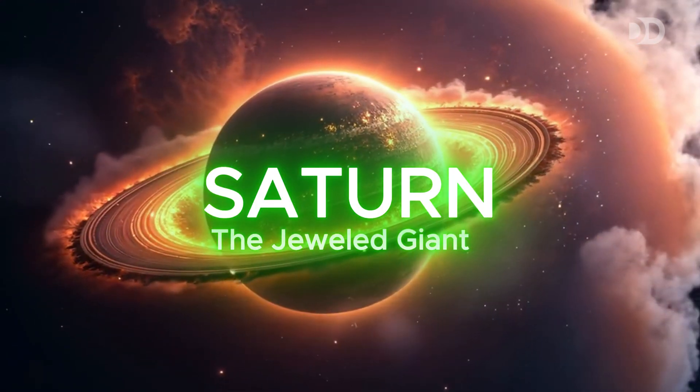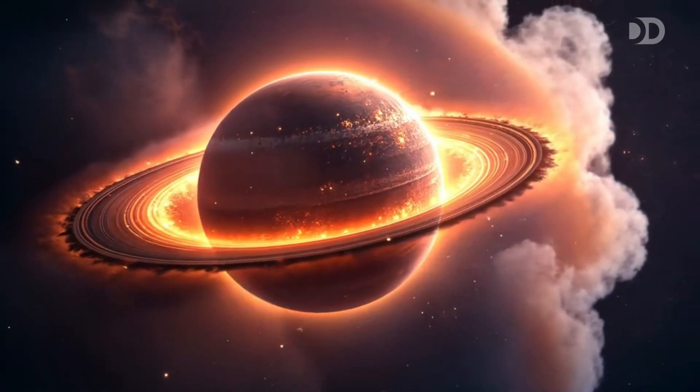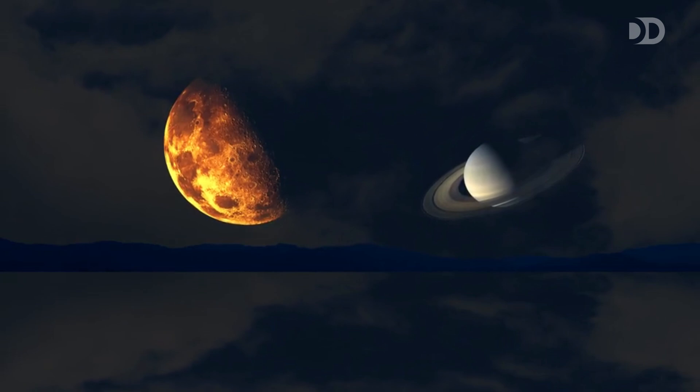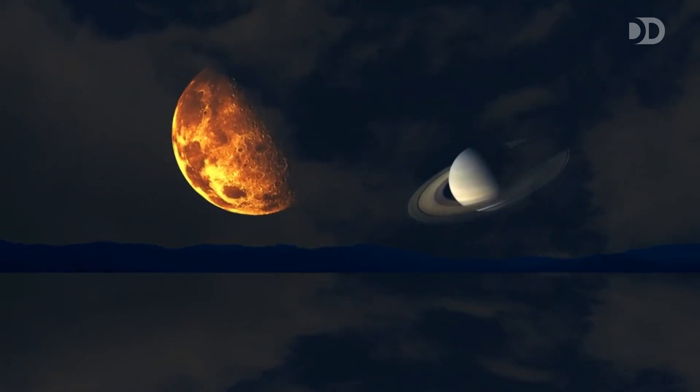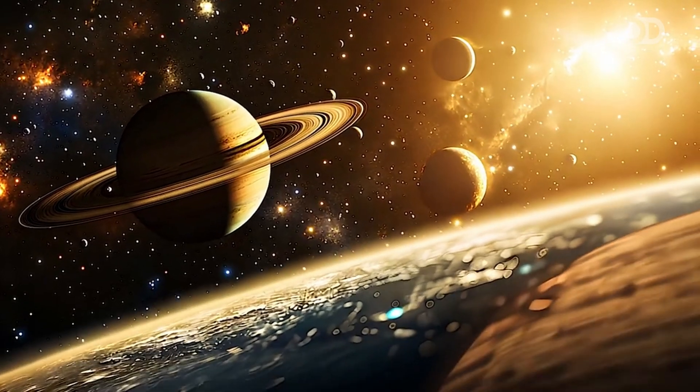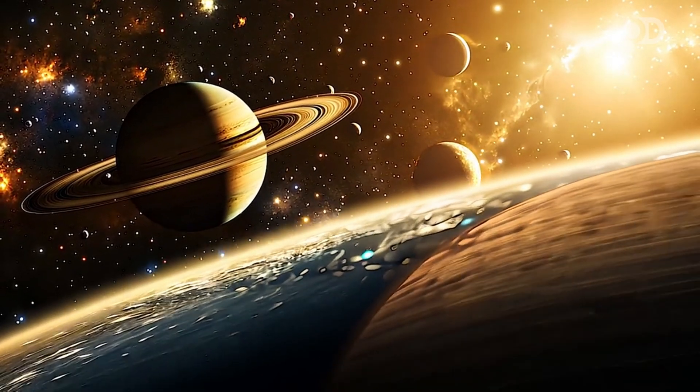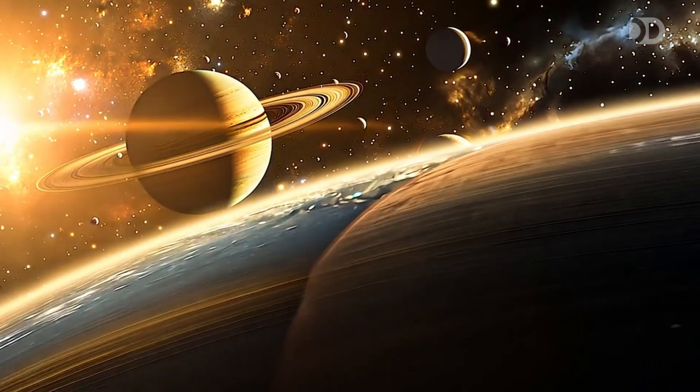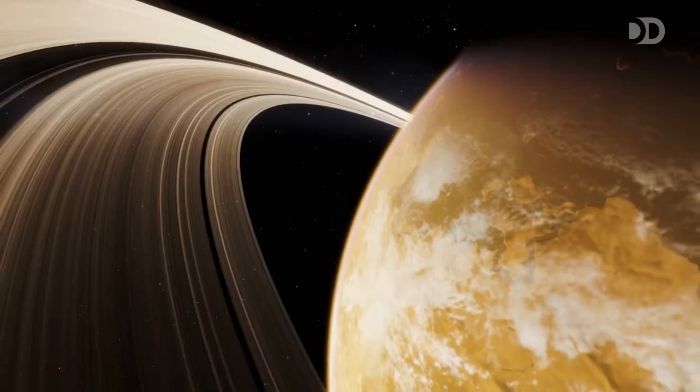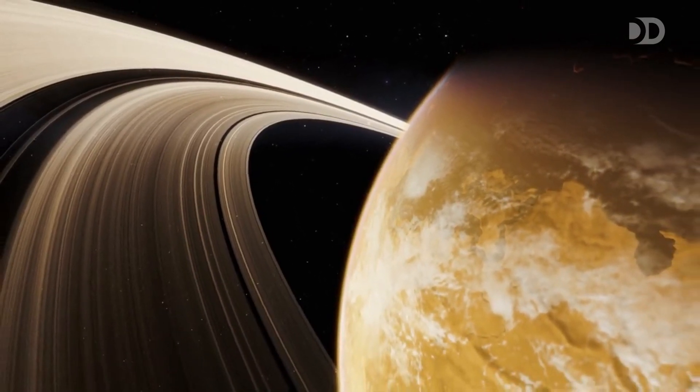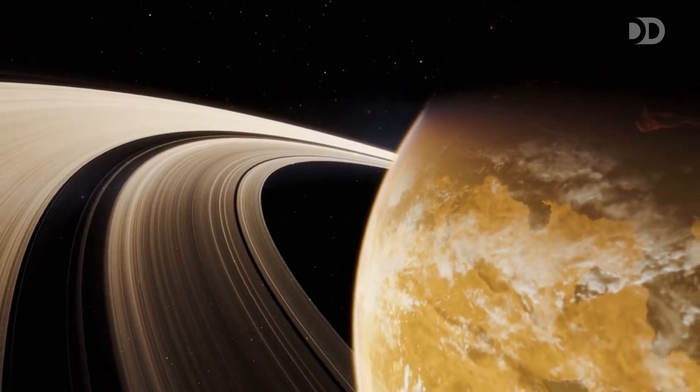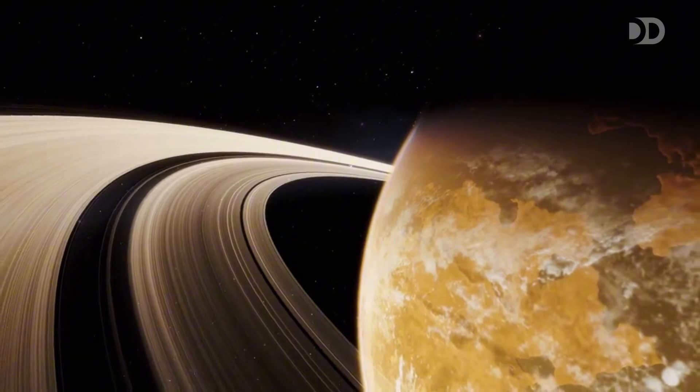Saturn awaits, adorned with its iconic rings. A breathtaking sight even from afar. Floating in the cold depths of our solar system, Saturn is often called the jewel giant for good reason. Its rings shimmer like cosmic jewelry, catching the sunlight and casting a delicate glow that can be seen even through small backyard telescopes. For centuries, astronomers have been captivated by Saturn's beauty, sketching its rings and dreaming of what secrets they might hold. These rings, made of countless particles of ice and rock, orbit Saturn in a delicate dance.